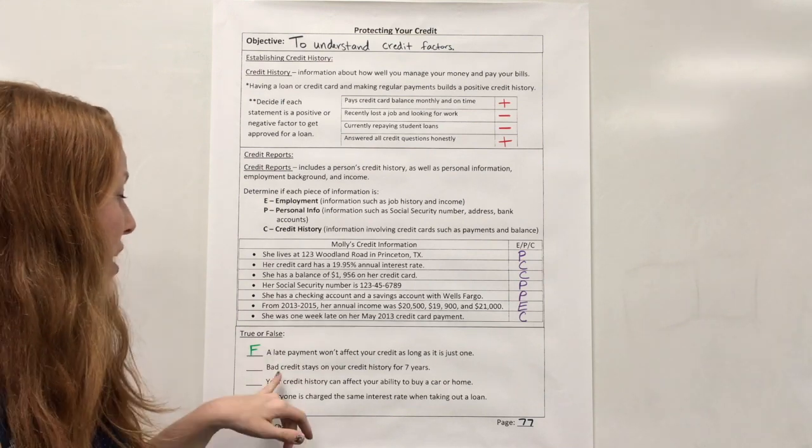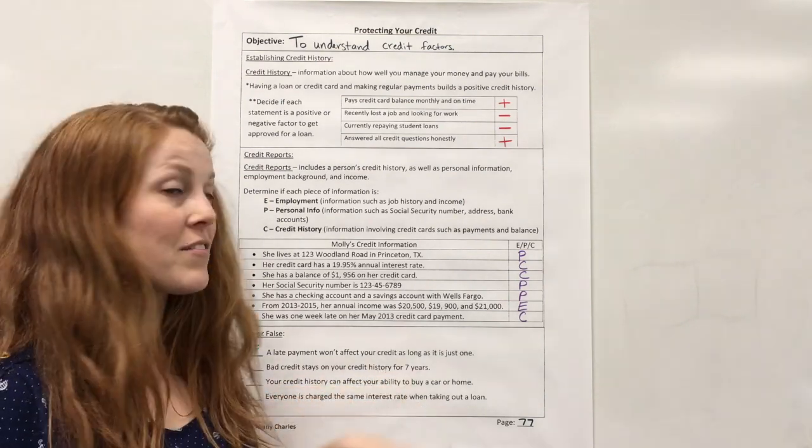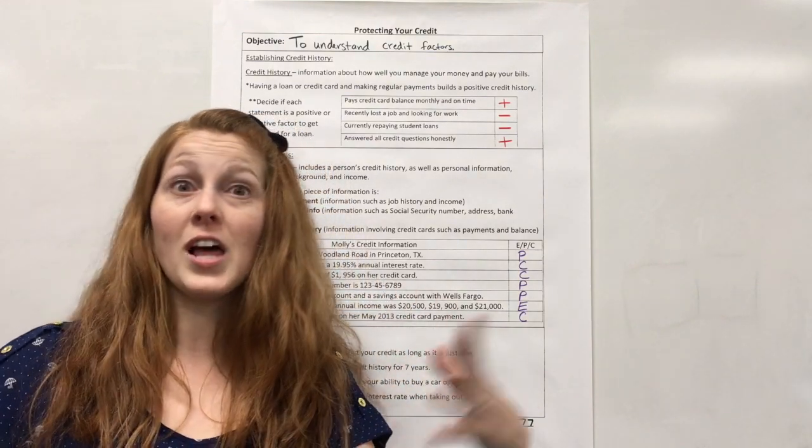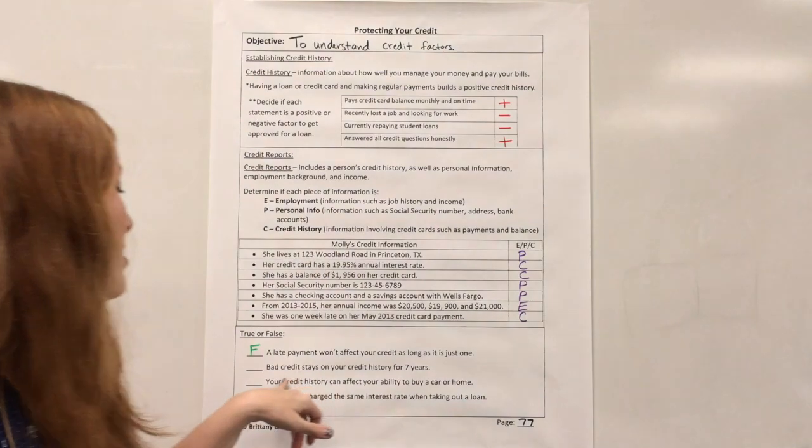Okay. Bad credit stays on your credit history for seven years. Well, some people don't know. Like, is it on there for just a couple of years? Is it on there for life? And it actually, this is true.